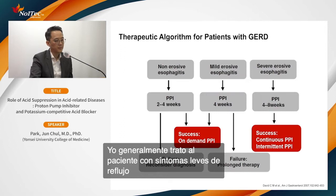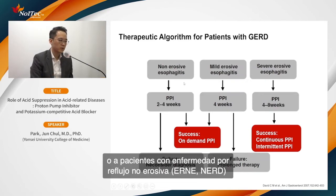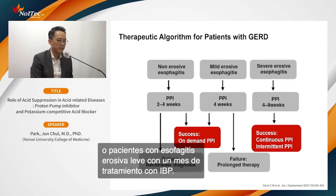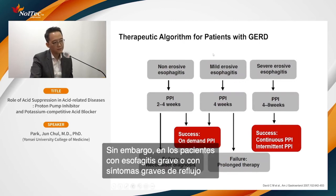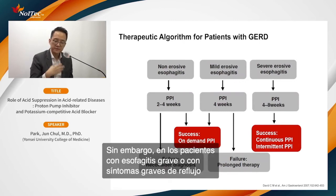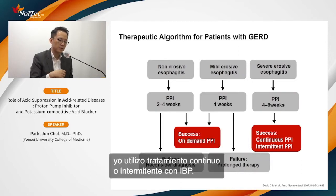In my personal treatment algorithm: for mild reflux symptoms, NERD, or mild erosive esophagitis, I prescribe about one month of PPI, then after symptom check-up, I prefer on-demand PPI. For very severe erosive esophagitis or severe reflux disease symptoms, I use continuous or intermittent PPI.